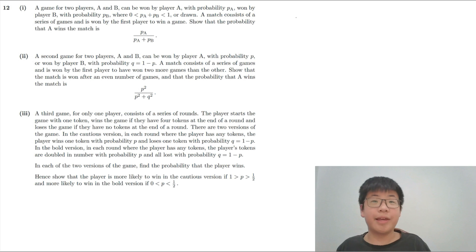So a game of two players can be won by player A, won by player B, or drawn. PA plus PB won or dropped. A match consists of a series of games and is won by the first player to win a game. So what is the probability that A wins the match?